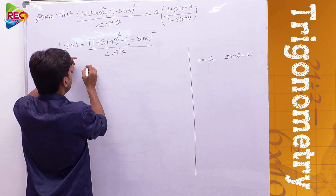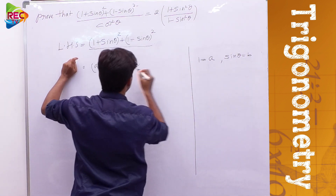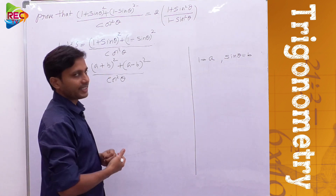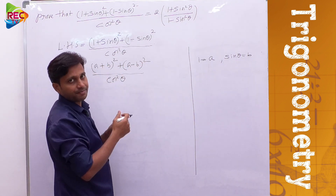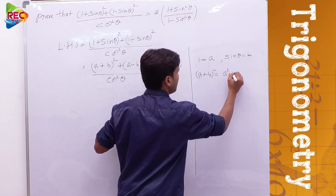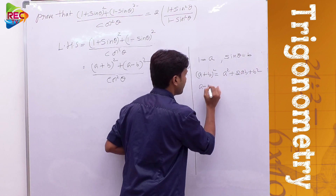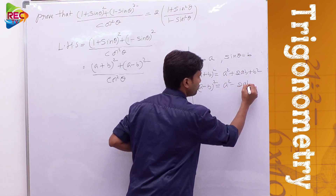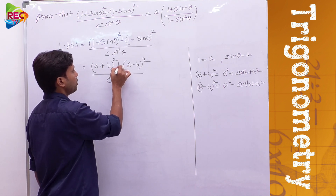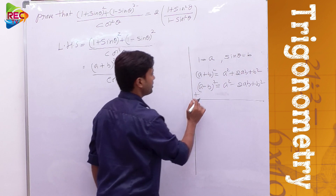So the numerator is in the form of (a + b)² plus (a - b)². From algebra, (a + b)² = a² + 2ab + b², and (a - b)² = a² - 2ab + b². We are adding these two expressions together.